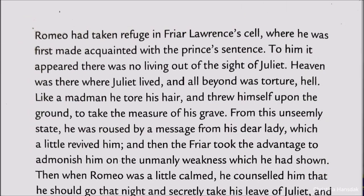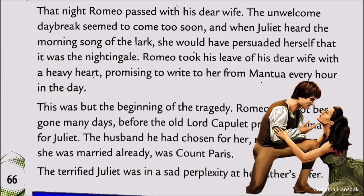Romeo had not yet gone to Mantua. He had taken refuge in Friar Lawrence's cell, and had promised Juliet to spend the night with her. So that night Romeo passed with his dear wife. Then early morning he took his leave with a heavy heart and promised Juliet that every hour he would write to her from Mantua.